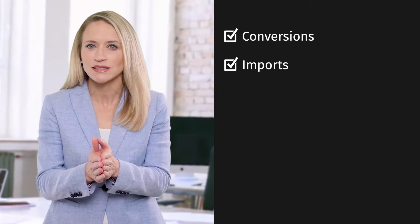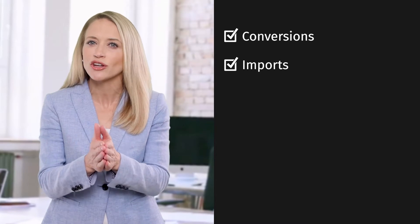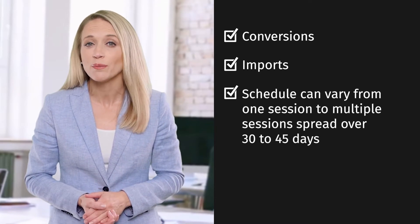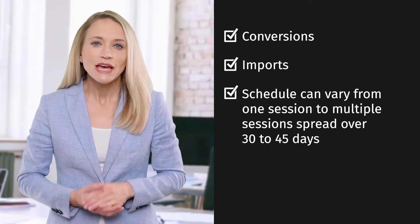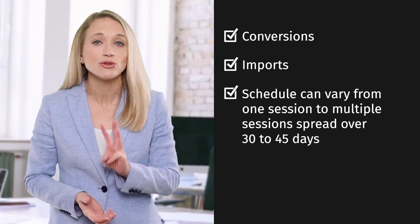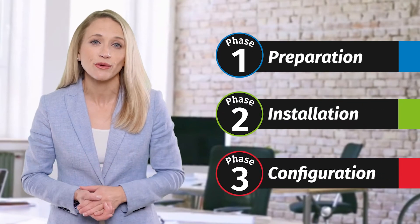While the primary tasks and topics of all CCH Access module implementations are the same, we will customize your tasks and topics, change sequences, and adjust schedules based on your needs. Your implementation will be scheduled based upon the best available timeline for your specific situation. Just like the entire project has three phases, implementation is also divided into three phases: preparation, installation, and configuration.